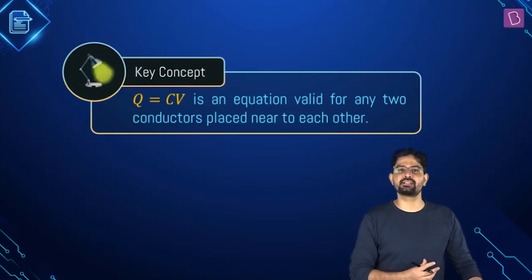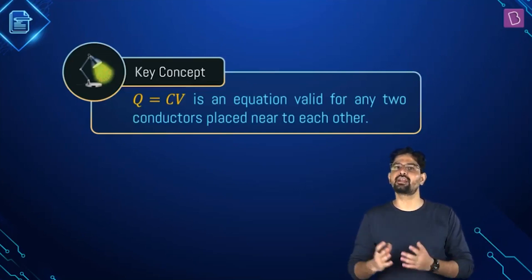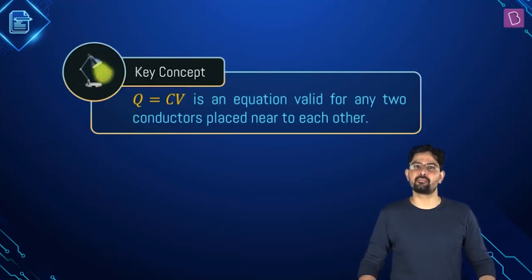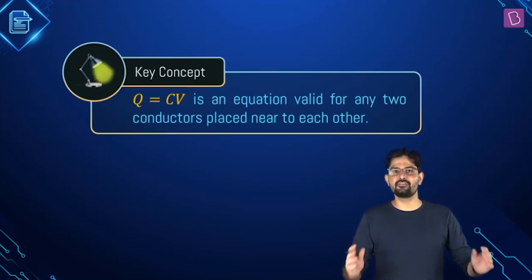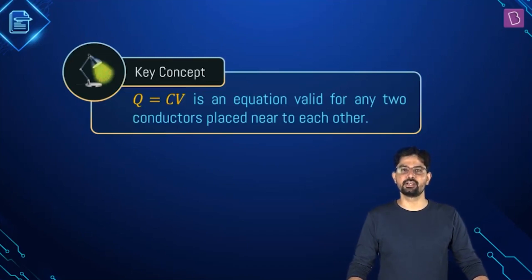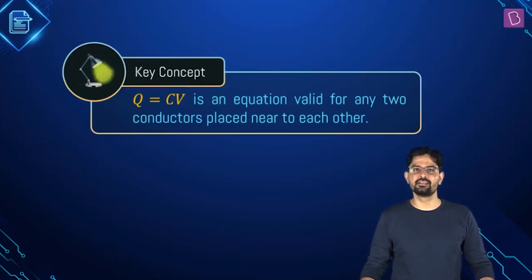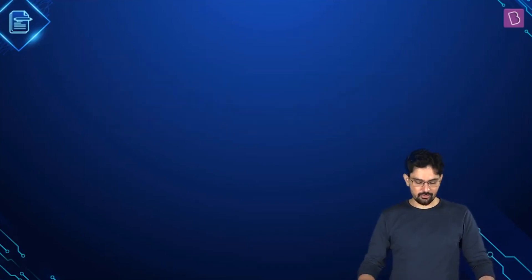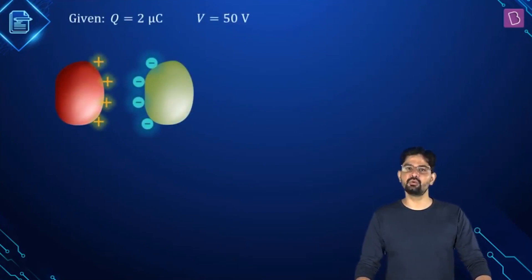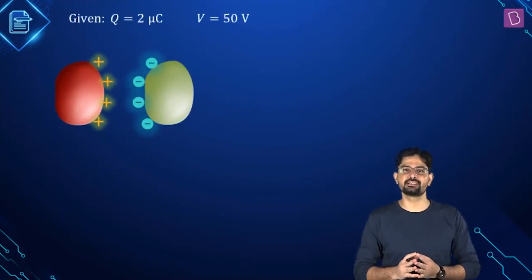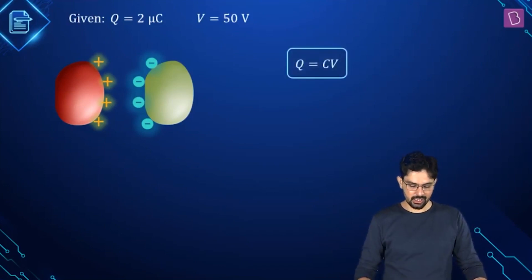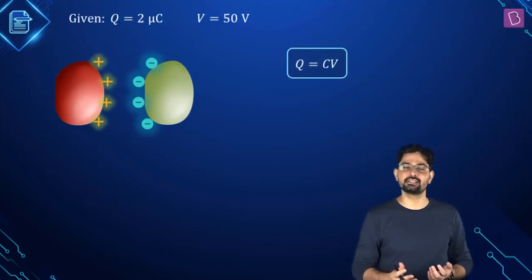How effective this capacitor is going to be depends upon other factors, but nevertheless it is a capacitor and has the capacity to store charge. When dealing with such a setup, the equation Q = CV is valid. If the charge on one conductor is +2 microcoulomb, then the charge on the other conductor has to be −2 microcoulomb. We can use Q = CV to find the capacitance, giving C = Q/V.